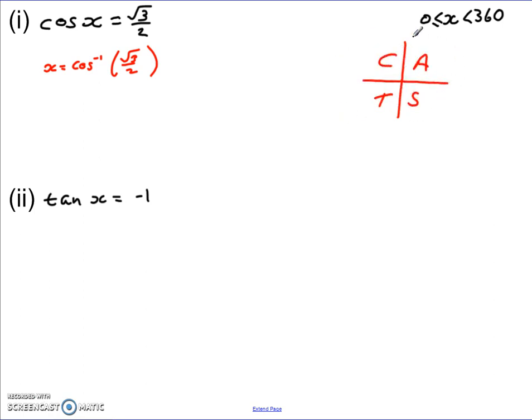Now remember the CAST diagram tells us where our solutions will lie for any of the trig functions. Remember the repetitive nature of them. So we keep repeating every 360 degrees when it's just cos x, tan x, sin x. When we start to put, you know, cos 2x, tan 2x, that changes a bit.